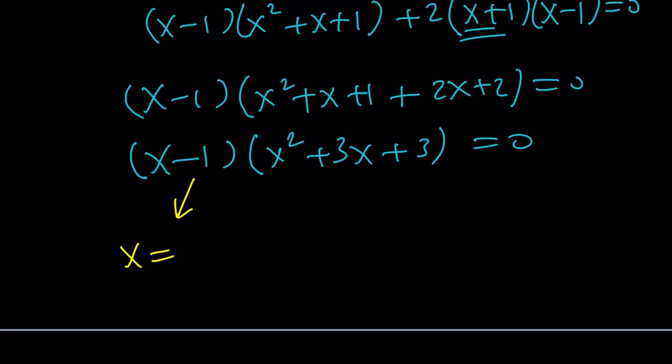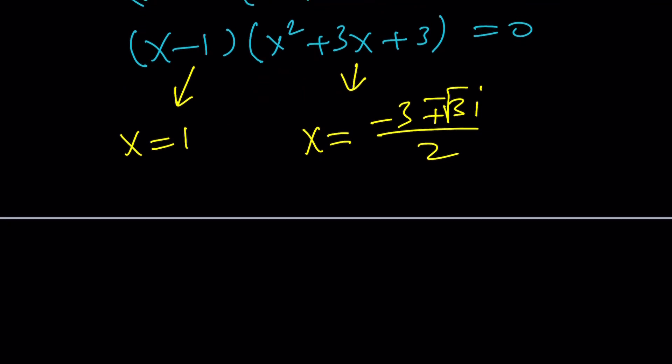So from here, again, x is going to be 1, and x is going to be, what was the roots? Negative 3 plus minus square root of 3i divided by 2. By the way, this is a special number.